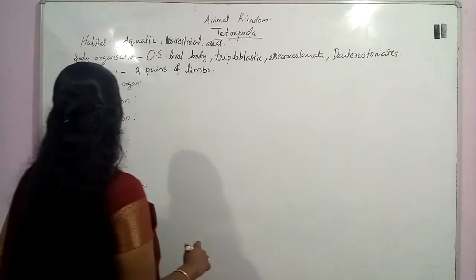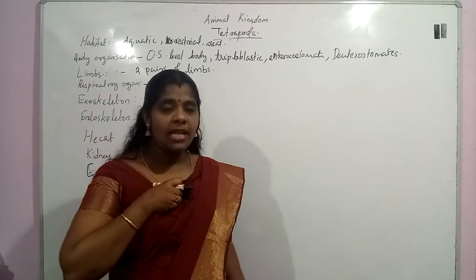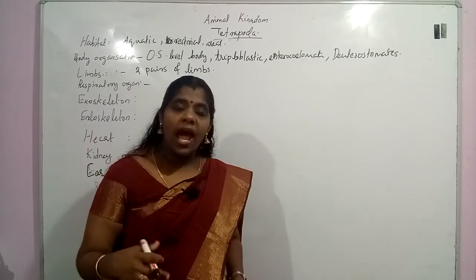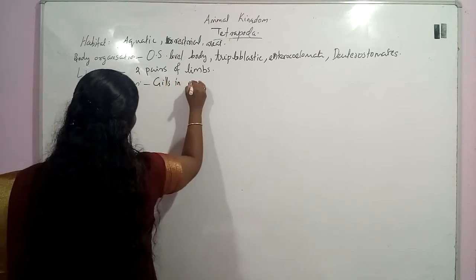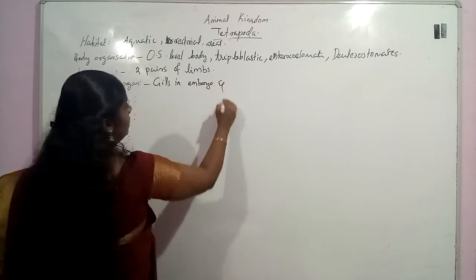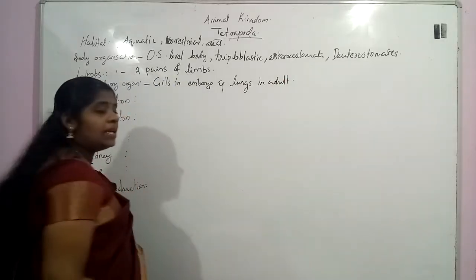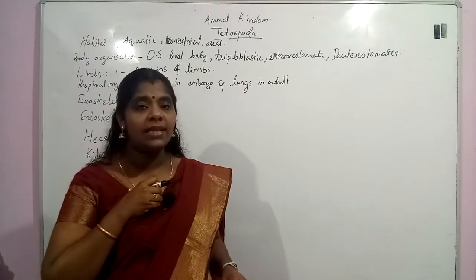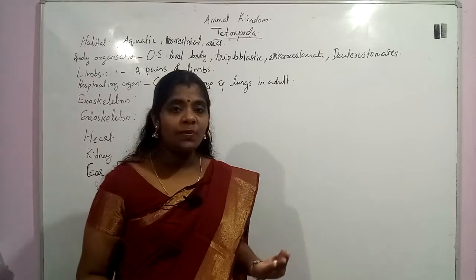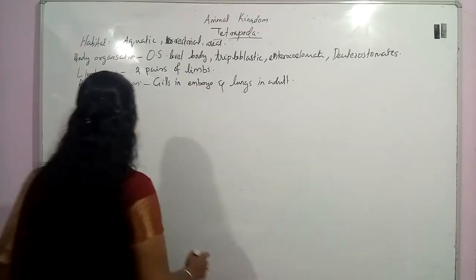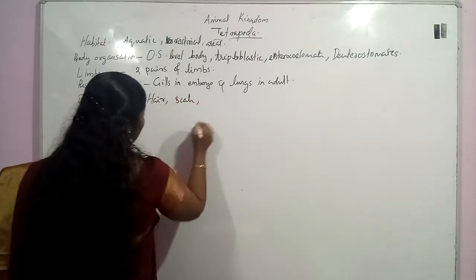The next characteristic feature is the respiratory organ. In this group of organisms, the respiratory organ is gills in the embryonic stage and lungs in the adult stage. The exoskeleton is made with either scales, hair, or feathers. There are different types of exoskeleton present — body hair, scales, or feathers.